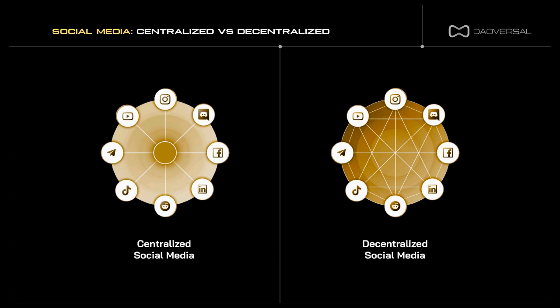The third advantage is convenient content moderation — centralized platforms can quickly moderate content, maintaining a level of control over harmful or inappropriate material. The disadvantages are: number one, privacy concerns — since user data is stored on centralized servers, it raises privacy and data security issues as users relinquish control over their information. Second, algorithmic manipulation — content curation algorithms may prioritize certain content over others, potentially affecting the flow of information and user perspective. And finally, single points of control — centralized platforms are susceptible to single points of failure, leading to service disruptions or data breaches.